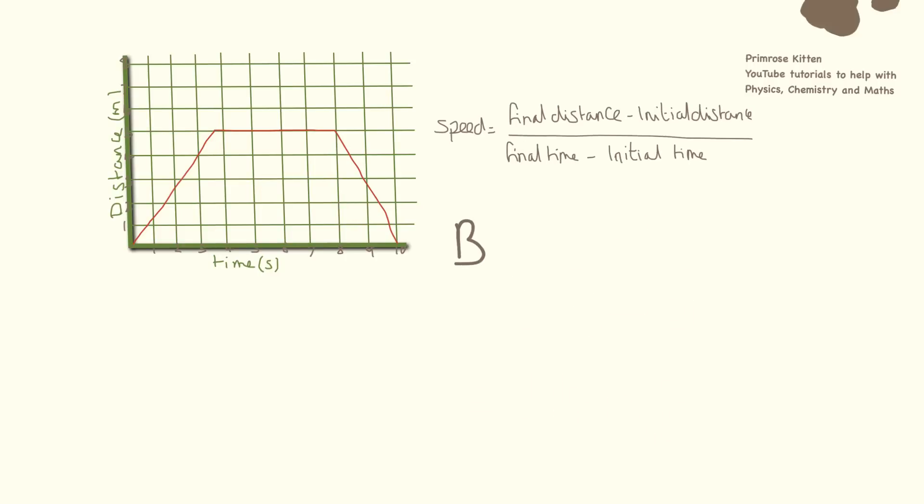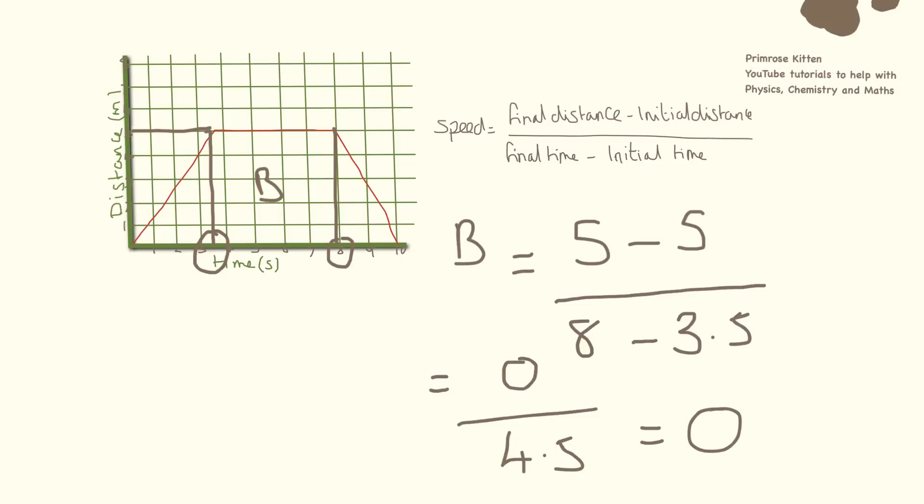So for section B, if I just pop that on there for you again, our final distance, if we go across, is five. Our initial distance is also five. We can see, because we haven't moved anywhere, final and initial distance are the same thing. We can then divide that by the final time, which is eight, minus the initial time, which is 3.5. If we just look at that, it's going to give us zero divided by 4.5. Now, zero divided by anything is going to be zero. So that is zero meters per second, which fits in with what we said earlier, that if we have a straight line on the graph, things are stationary.